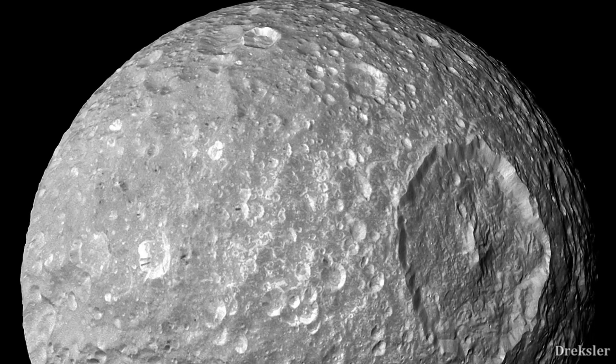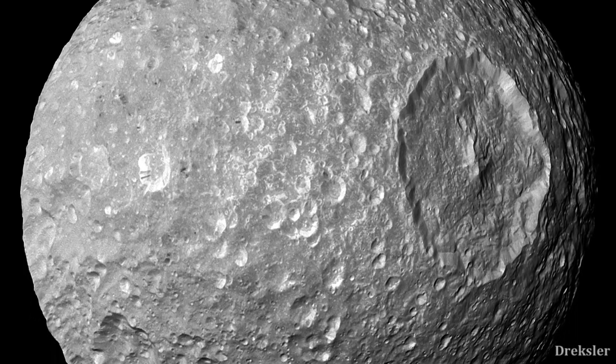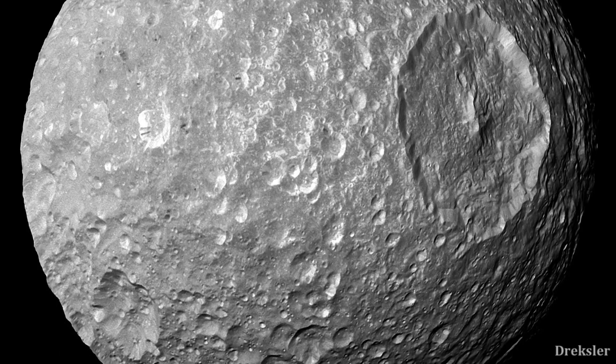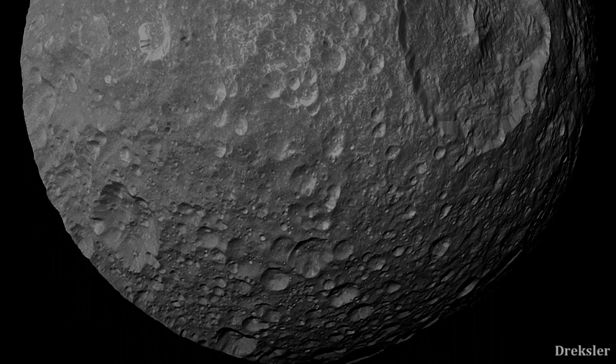Other Saturn's moon Mimas, which is the smallest spherical object in the solar system, also likely has an ocean, but clearly it is not as good for life because it is not as active as Enceladus' ocean.